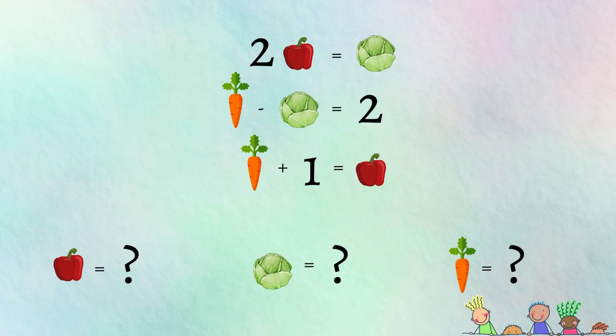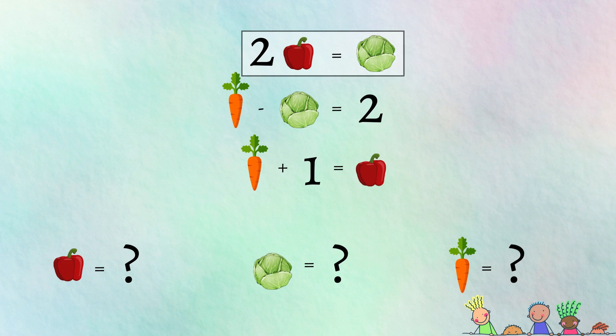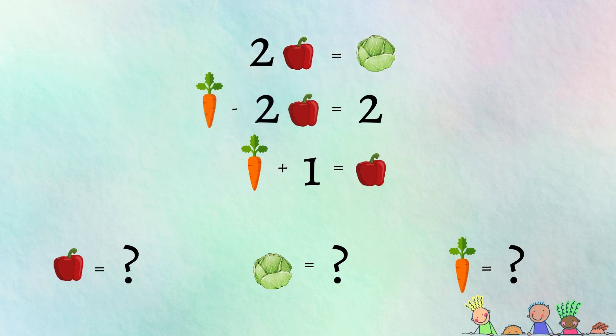Okay, you keep those answers to yourself until we all solve this together. Deal? Let us start with the first equation, seems to be the most obvious choice since we already know what the cabbage is in terms of the bell pepper. I'm going to plug it in for the cabbage in the second equation. That gives me carrot minus two bell peppers equals two.